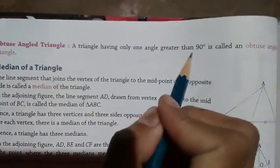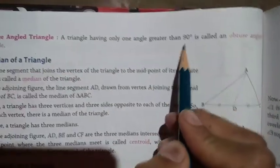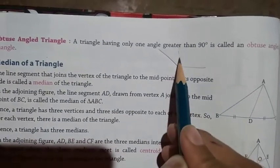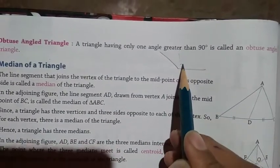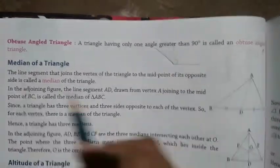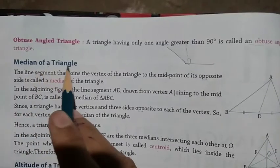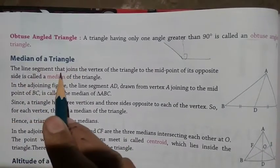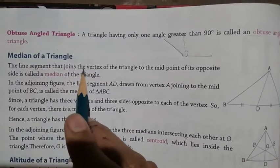An obtuse-angled triangle is a triangle having only one angle greater than 90 degrees. When one angle is greater than 90 degrees, the triangle opens wider on that side. That becomes an obtuse-angled triangle.